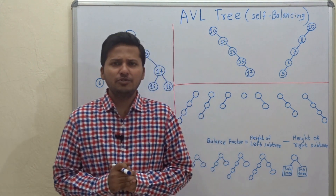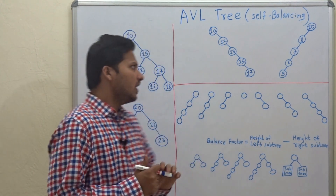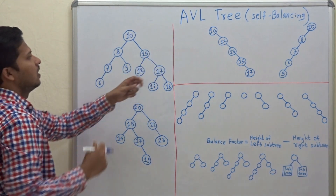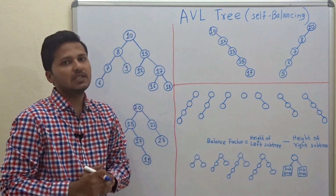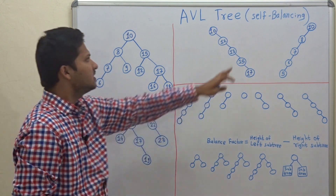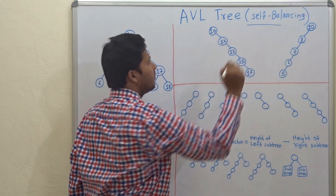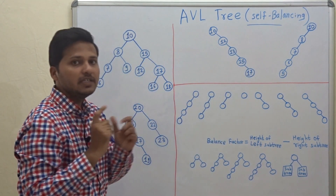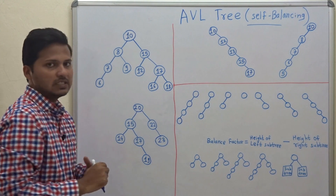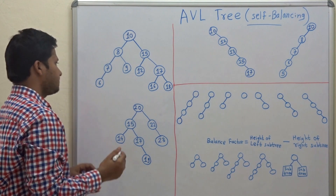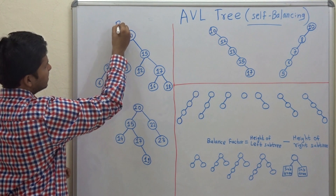Hello friends, today we are going to see what is an AVL tree. An AVL tree is a self-balancing tree. What is the meaning of self-balancing and why is this self-balancing needed — this is what I am going to explain in this lecture. Now, this is a binary search tree.